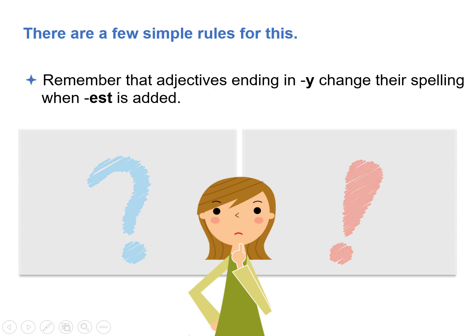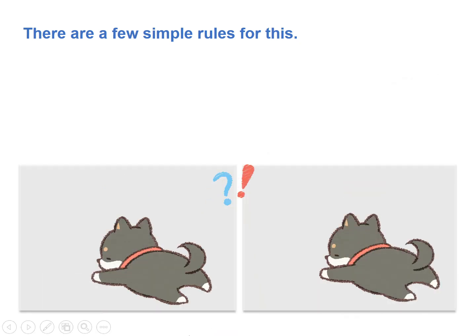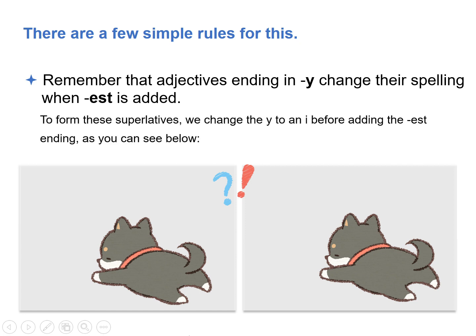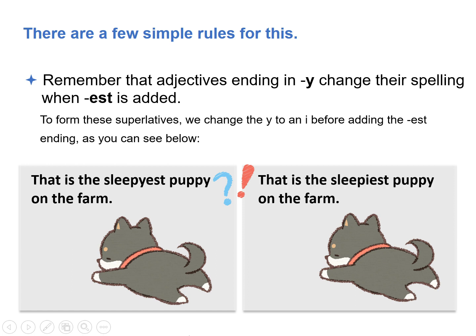Remember that adjectives ending in Y change their spelling when EST is added. To form these superlatives, we change the Y to an I before adding the EST ending. Incorrect: That is the sleepyest puppy on the farm. Correct: That is the sleepiest puppy on the farm.